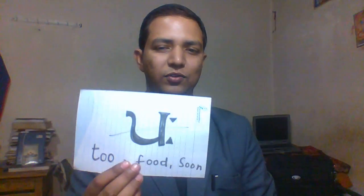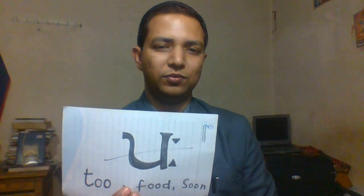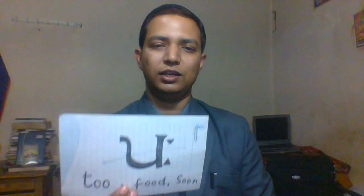The F sound is made with the lower lip and upper teeth — fa. Practise every pronunciation with me. Next sound is the long U — a longer U sound — as in food and soon. This is the symbol for long U.